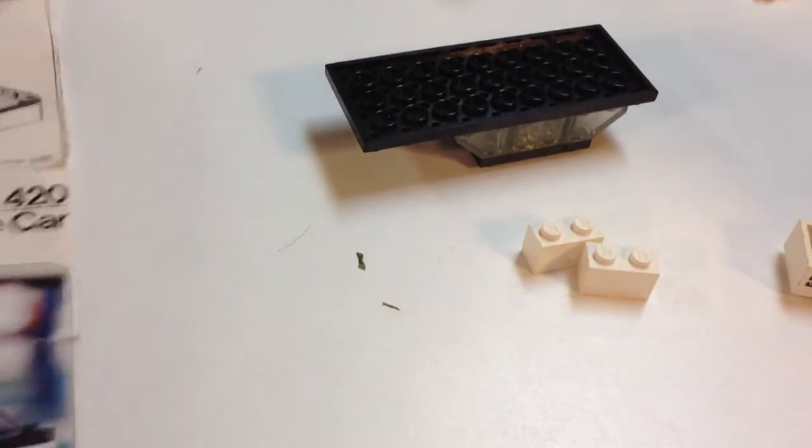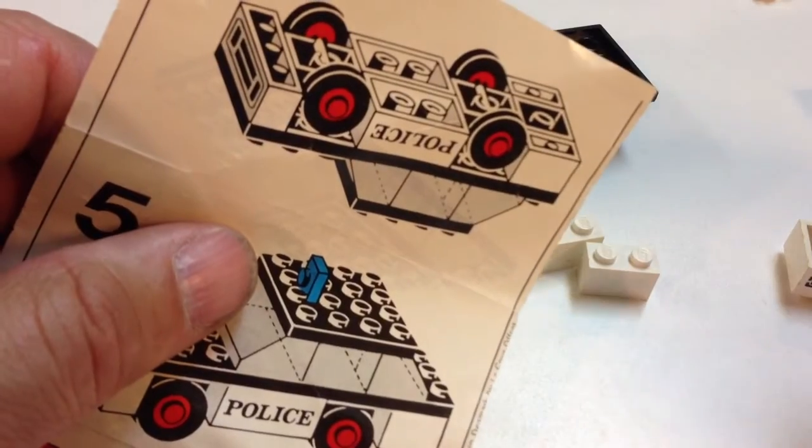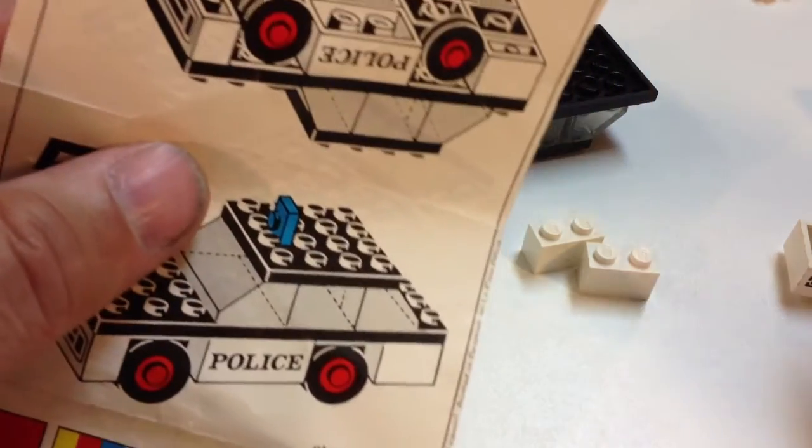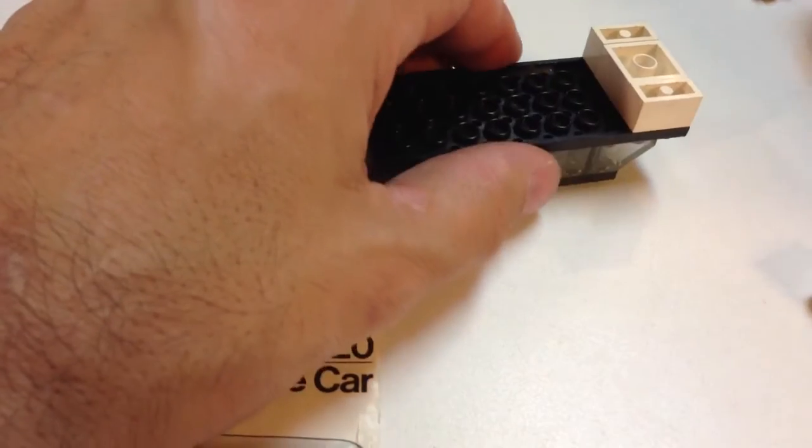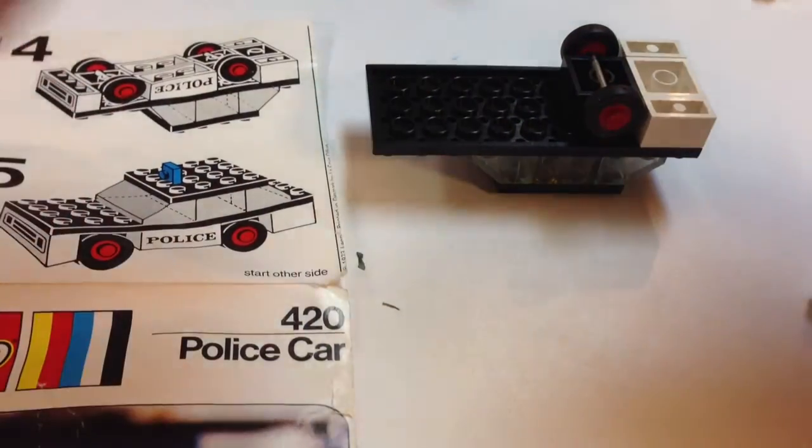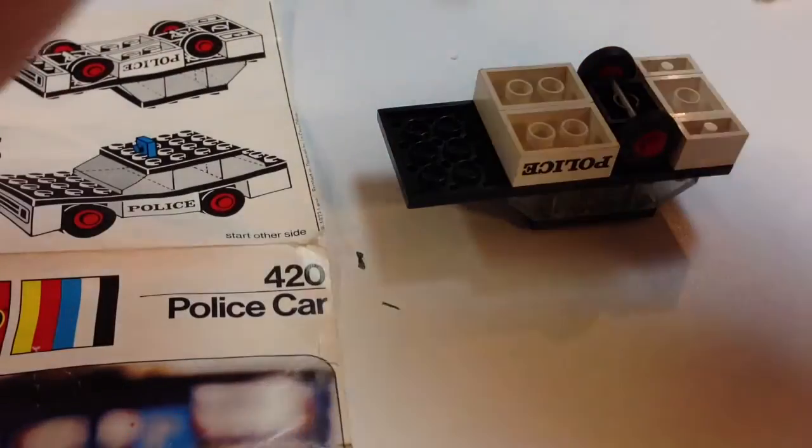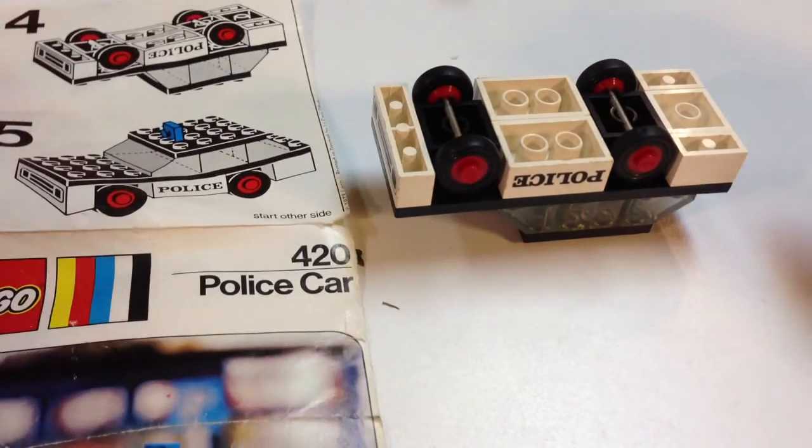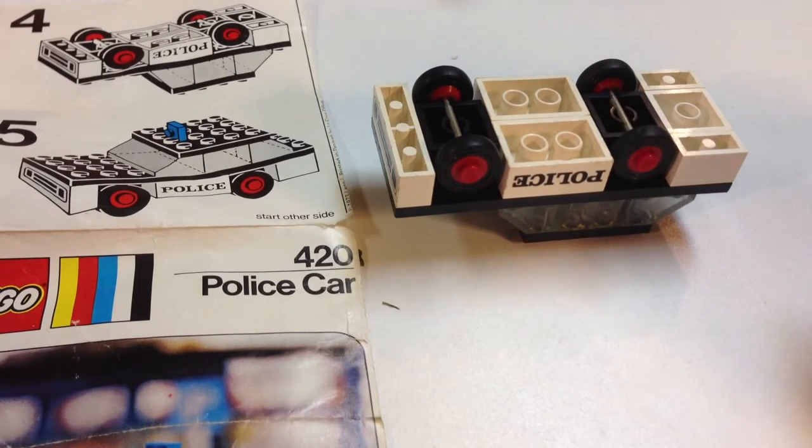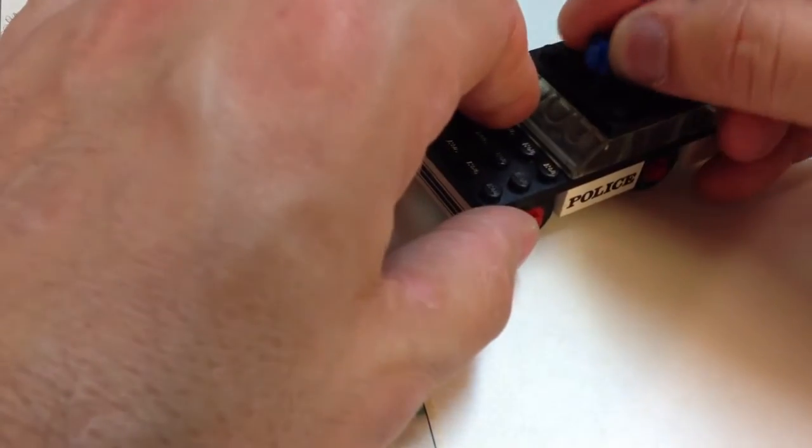But if you look at the instructions, it shows one by twos. And clearly they have a two by two in there. But you know, sometimes the instructions actually do have some errors. Occasionally, it's very rare. But I'm going to go by what the instructions say. It's got one by twos there. I'll put the two by two there. And you know, hey, it's a small set. No big deal. I don't care. But this is why sometimes you can't trust the inventories. And people try their best to make them accurate. And for the most part, the new ones are accurate. But just know that sometimes if somebody lists something as complete, and they're going just by the inventory, you may find that you might not be able to build the model. So that would have been the case with this. I could have built it, but it wouldn't have been exactly like the instructions, which is no big deal.